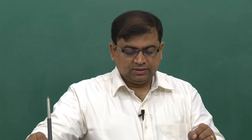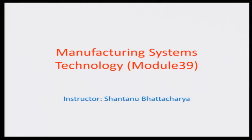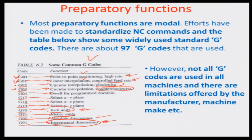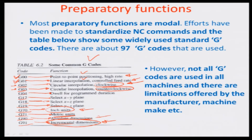Hello and welcome to this manufacturing system technology module 39. We were talking about rapid and linear positioning in the last module. Let us look at a few more issues related to the circular interpolation, which is actually a command given by G02, as can be seen in this particular table illustrated here. This motion command indicates that the circular interpolation would take place in the clockwise direction.